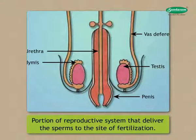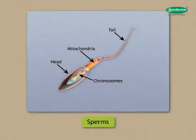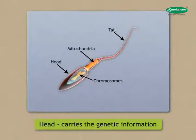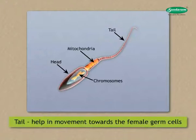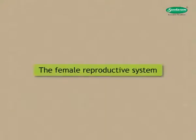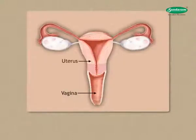The penis is the portion of the reproductive system that delivers sperm to the site of fertilization. A sperm cell is composed of a head which carries genetic information, a middle part which carries mitochondria required for energy production, and a tail which acts like a flagellum to help in movement towards the female germ cells.